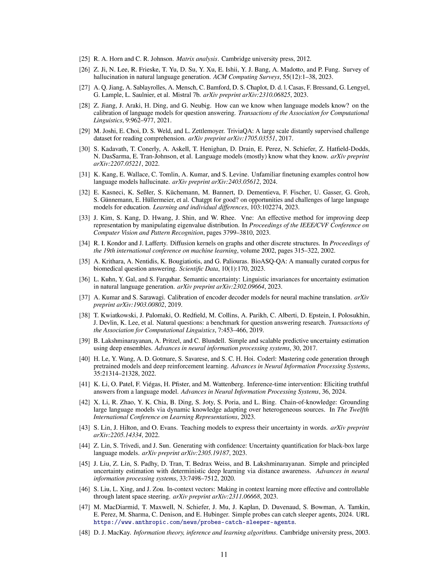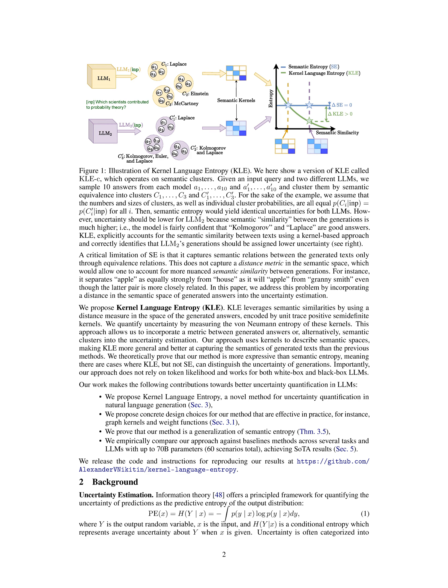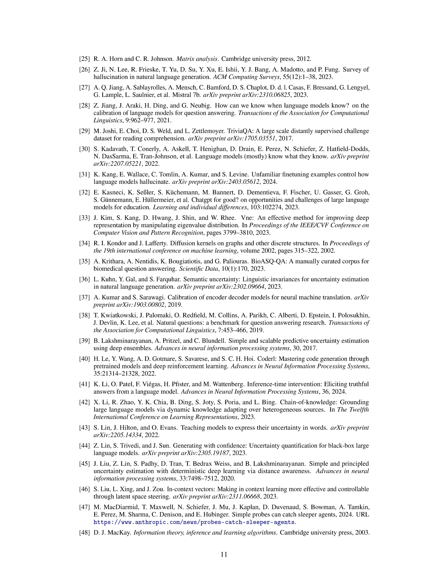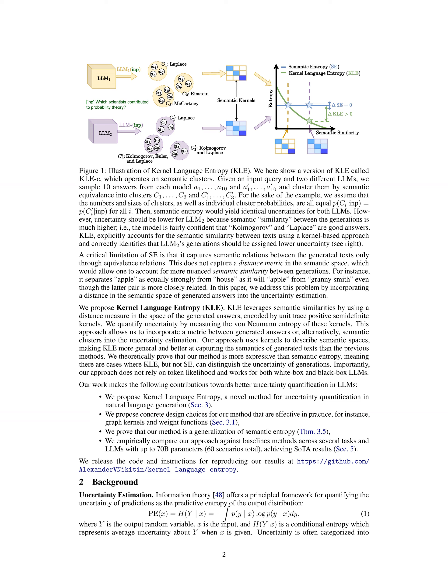Step 1 — Definition of semantic kernels: KLE leverages semantic similarities by using a distance measure in the space of generated answers encoded by unit trace positive semi-definite kernels. Step 2 — Quantifying uncertainty: Uncertainty is quantified by measuring the von Neumann entropy of these kernels, allowing for a more nuanced understanding of semantic uncertainty.